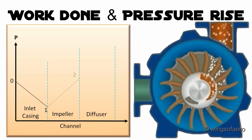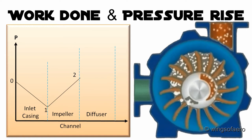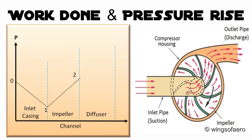Energy transfer takes place in the impeller, and the static pressure of the air increases from the inducer to the impeller tip due to centrifugal acceleration. The purpose of the diffuser, whether vaned or vaneless, is to convert the high velocity of the air leaving the impeller into pressure by slowing it down carefully to an acceptable level.